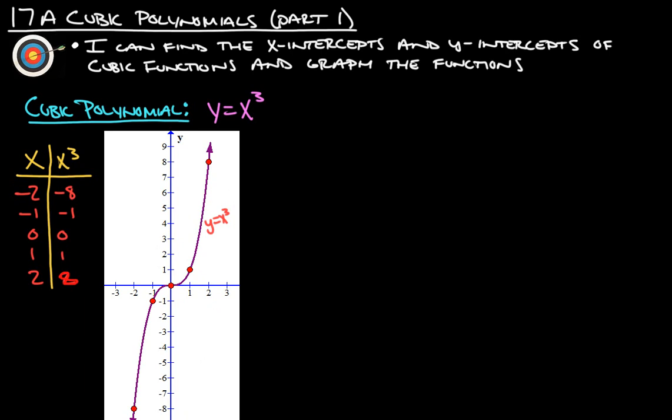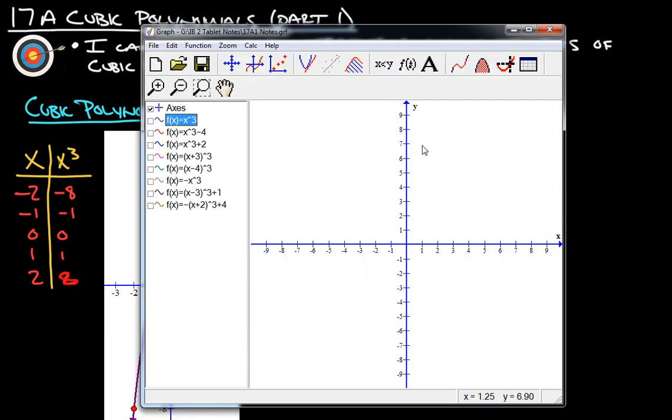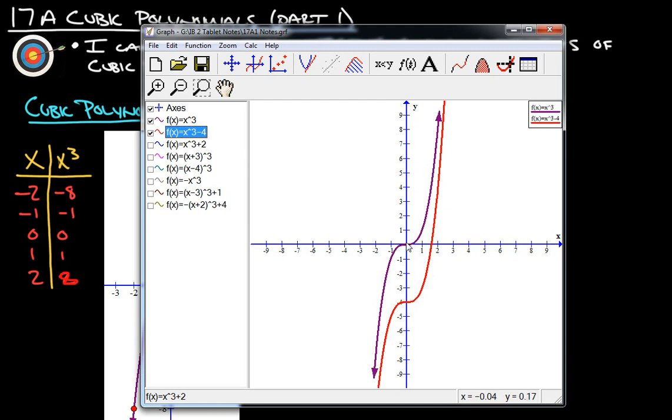Now let's take a look at some more cubic polynomials on the graph thing here. I came up with a bunch of different ones just to kind of look and see what the different numbers in the different spots will be. Here's our x cubed. Now this is x to the third minus 4. Let's see what that does. Same graph, but now it is just translated vertically down 3.